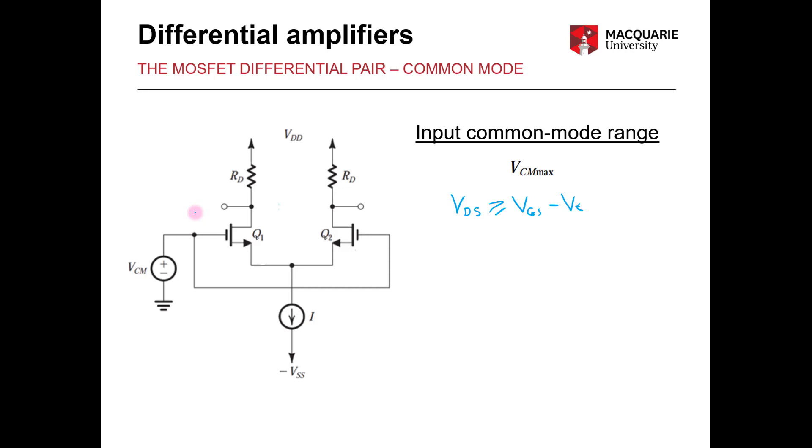So in this case we can rewrite this equation by splitting up the terms. So we have VD minus VS more than or equal to VG minus VS minus our threshold voltage VT. We can see straight away here that we can make a quick simplification as the VS will cancel out. So that leaves us with just VD more than or equal to VG minus VT.